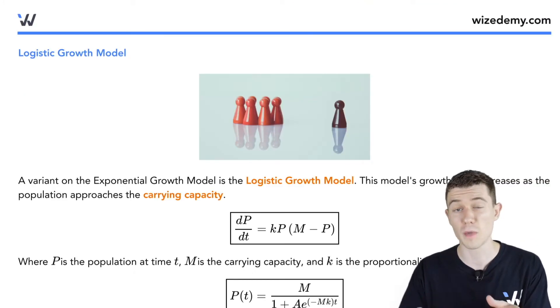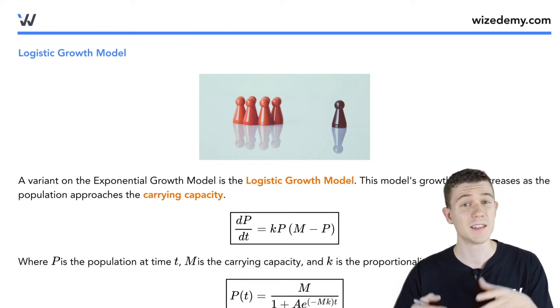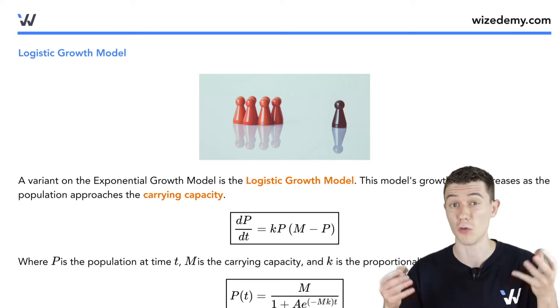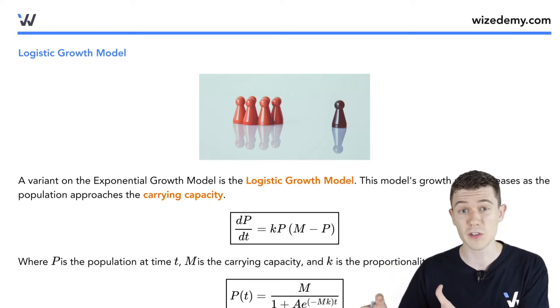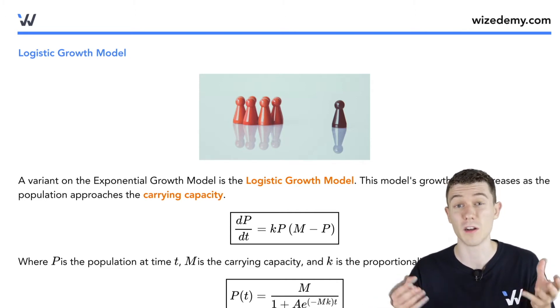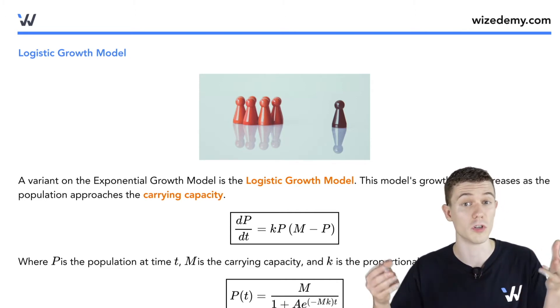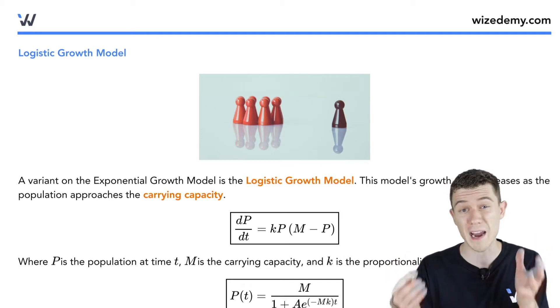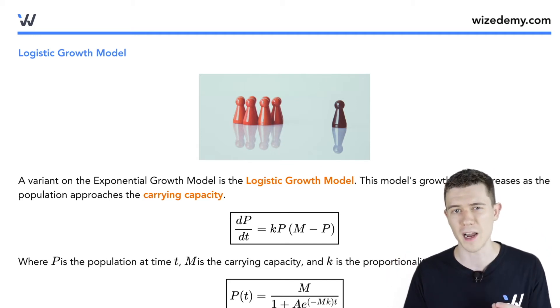There's another differential equation growth model called the logistic growth model. This one might be more realistic, since not every population can grow forever. There's often limited resources or other restrictions that can only allow for a population to grow so high. That limit is called the carrying capacity.